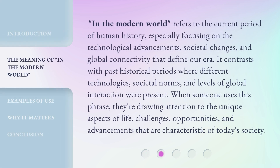In the Modern World refers to the current period of human history, especially focusing on the technological advancements, societal changes, and global connectivity that define our era. It contrasts with past historical periods where different technologies, societal norms, and levels of global interaction were present. When someone uses this phrase, they're drawing attention to the unique aspects of life, challenges, opportunities, and advancements that are characteristic of today's society.